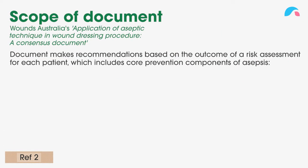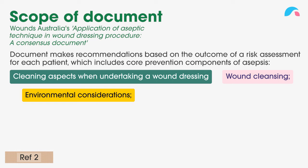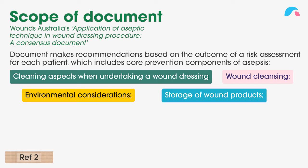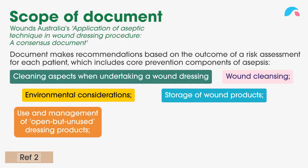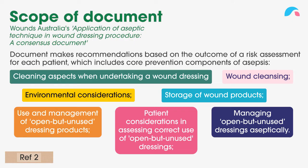The document makes recommendations based on the outcome of a risk assessment for each patient, which includes seven core prevention components of asepsis: one, cleaning aspects when undertaking a wound dressing; two, wound cleansing; three, environmental considerations; four, storage of wound products; five, use and management of open but unused dressing products; six, patient considerations in assessing correct use of open but unused dressings; and seven, managing open but unused dressings aseptically.